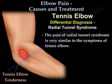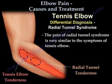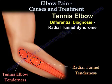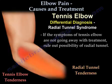This all occurs from degeneration, irritation, tears, and pain of the extensor tendons. For differential diagnosis, radial tunnel syndrome presents pain very similar in location to tennis elbow — on the outer side of the elbow. The pain of radial tunnel syndrome is usually distal to the lateral epicondyle and radiates down the forearm. If tennis elbow symptoms are not resolving with treatment, check for the possibility of radial tunnel syndrome.